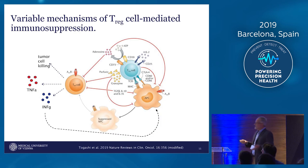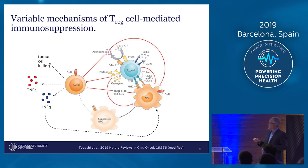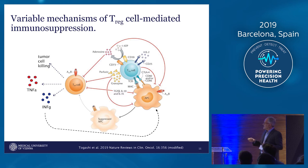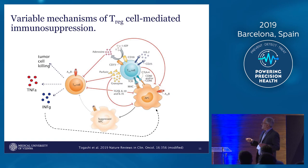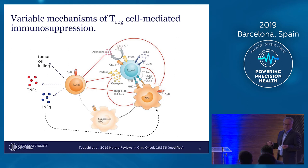Regulatory T cells can inhibit these effector T cells. The effector T cells are those which are killing the tumor, producing TNF-alpha and interferon gamma. And the regulatory T cells produce a lot of factors to inhibit this response — they hydrolyze ATP to adenosine, they produce granzyme B, perforins, TGF-beta, IL-10, and IL-34. These are all potential biomarkers which can then be detected using the platforms.